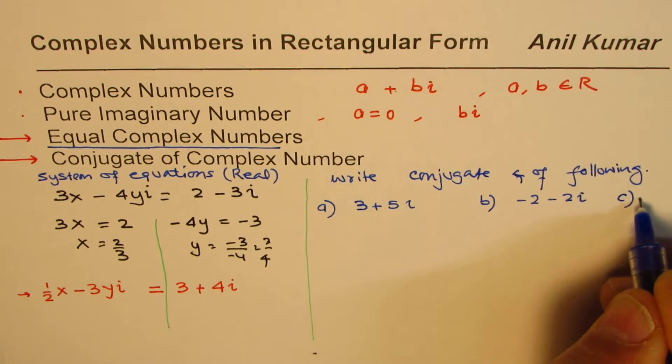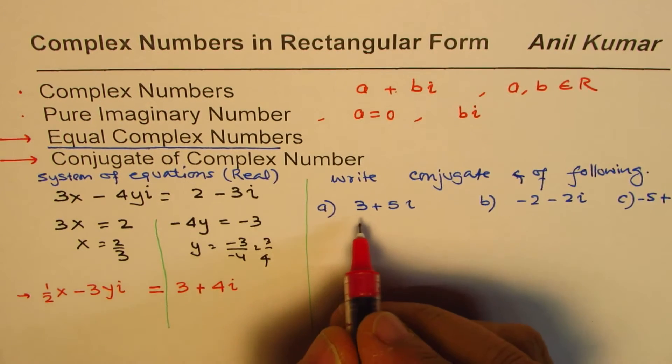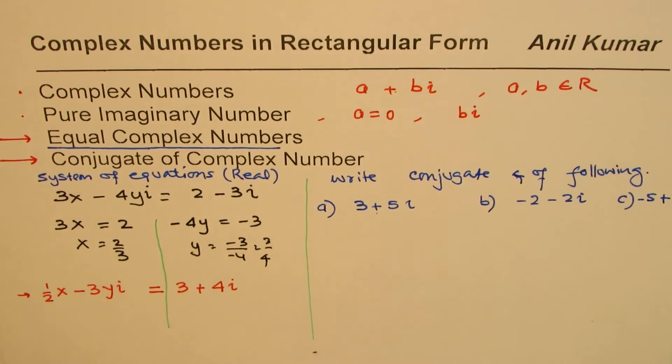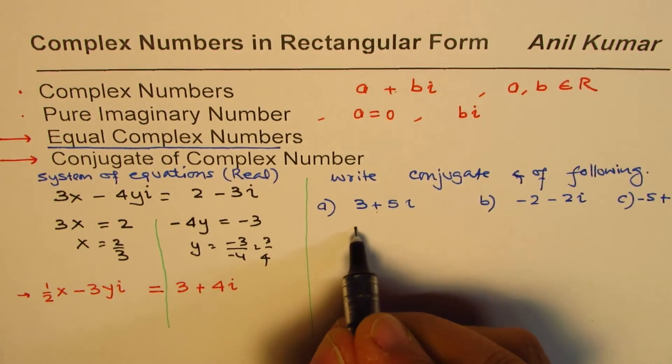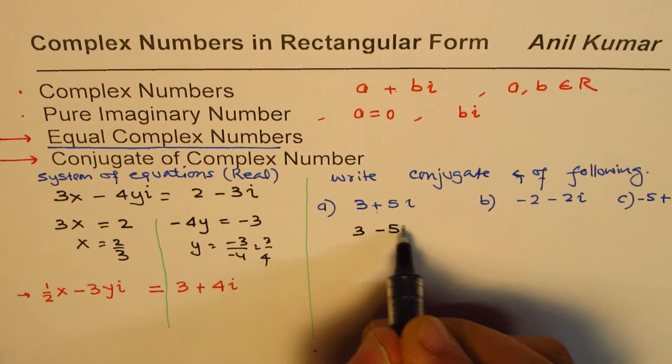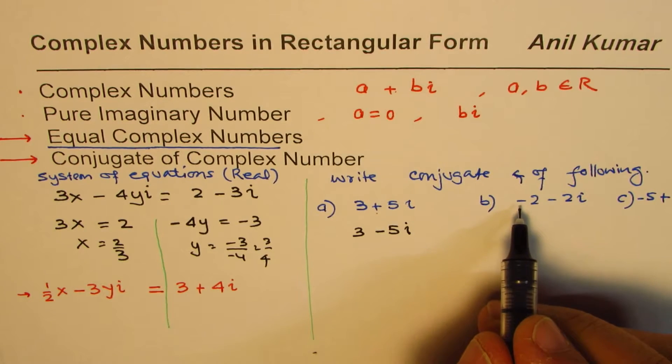We'll have c as minus 5 plus 3i. So let us say we have these three equations. We need to write their conjugate. Conjugate will be the one with this sign reversed. The conjugate for 3 plus 5i will be 3 minus 5i.